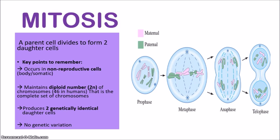The third point is that mitosis always produces two genetically identical daughter cells, meaning the daughter cells look exactly alike and they look exactly like the parent cell — they are all clones. And that leads to the final point: mitosis does not produce any type of variation at all. There is no genetic variation with this type of cell division.